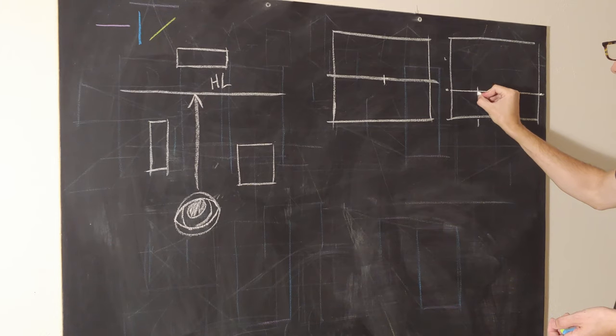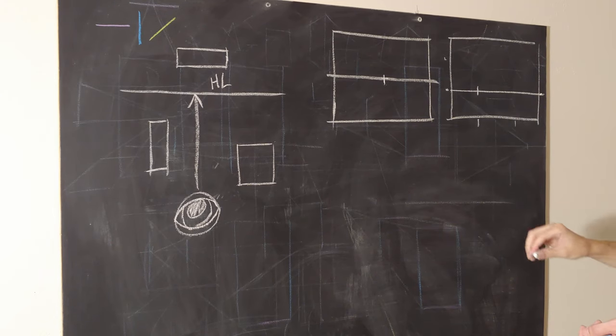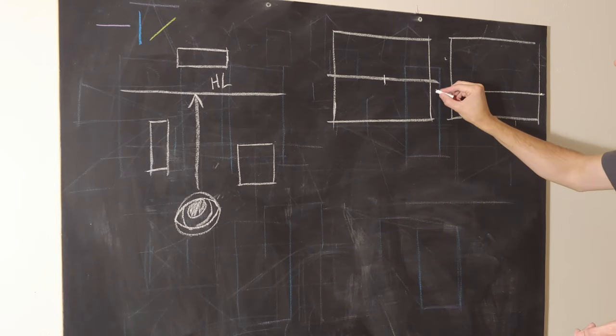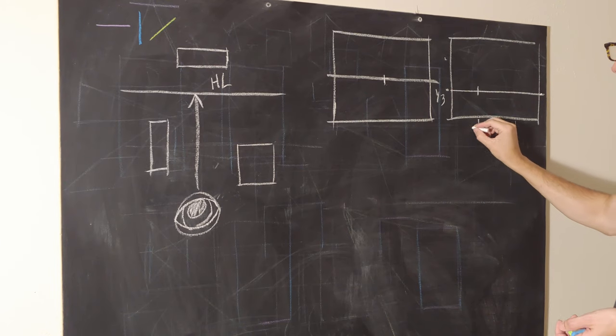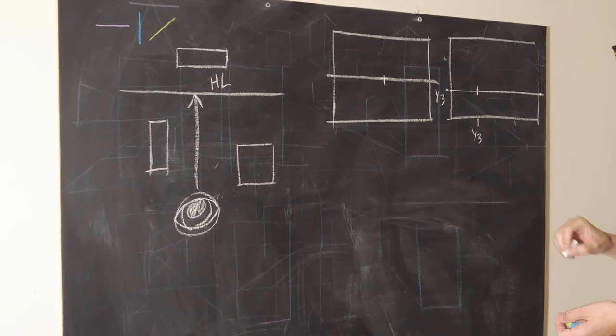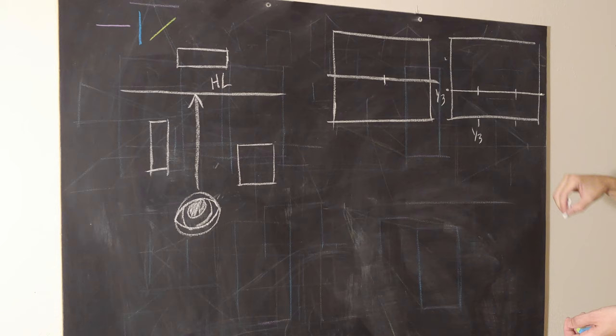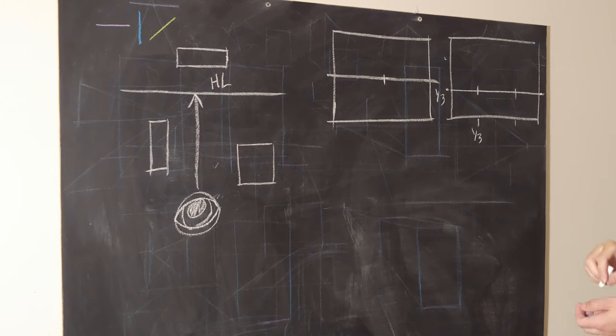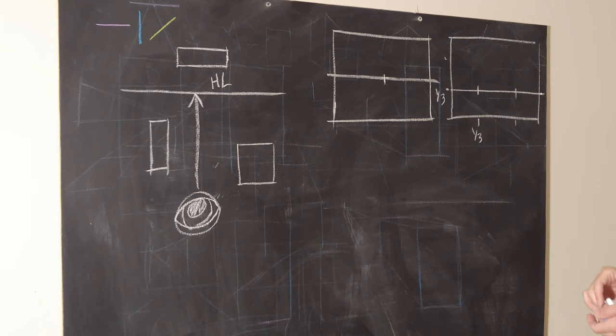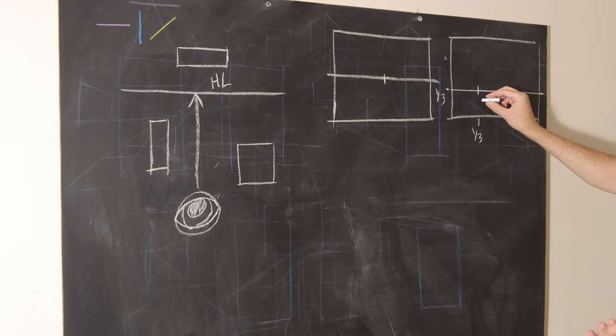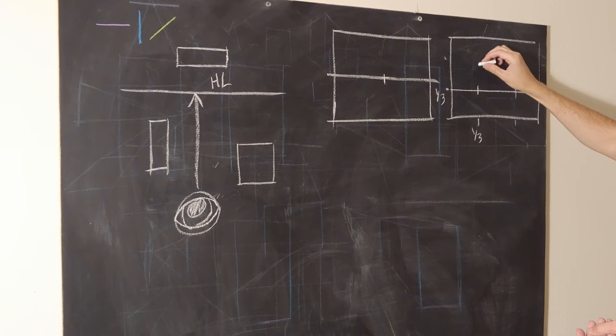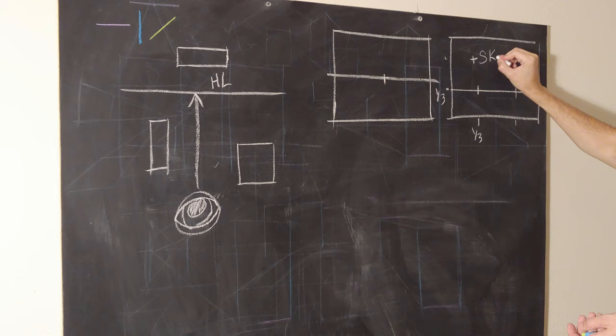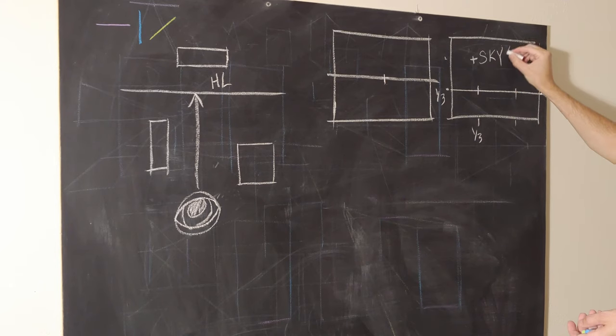So, you can put a vanishing point on that one-third mark. And these are kind of like ideal things. You can also put it here if you wanted. It doesn't really matter. It's kind of up to you as to where you want to do this. But just know that when you lower the horizon line, this adds space to the sky, or the ceiling if you're indoors.